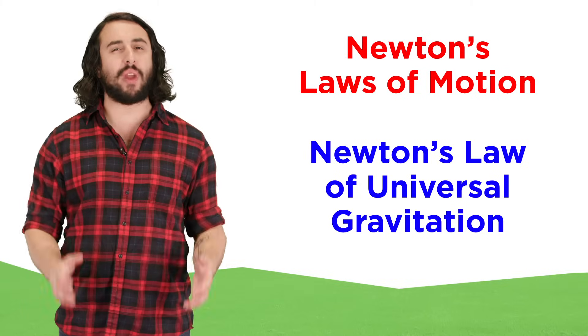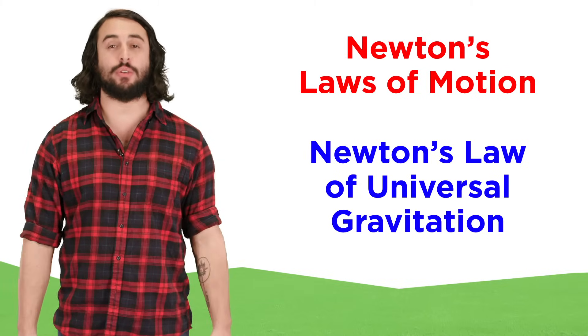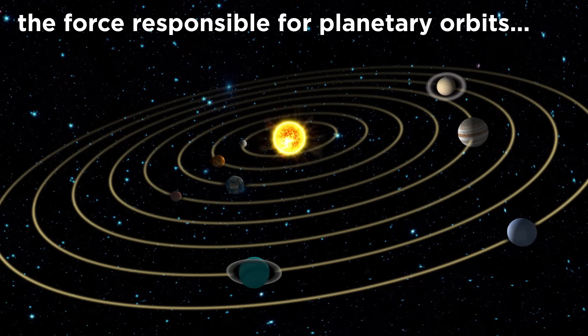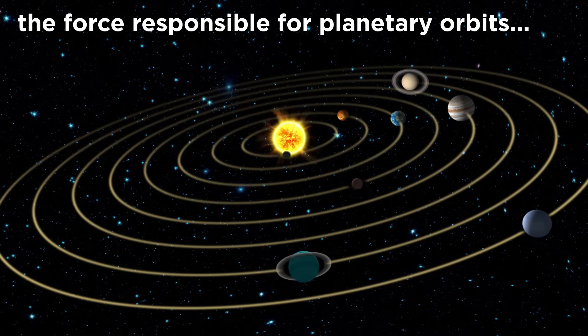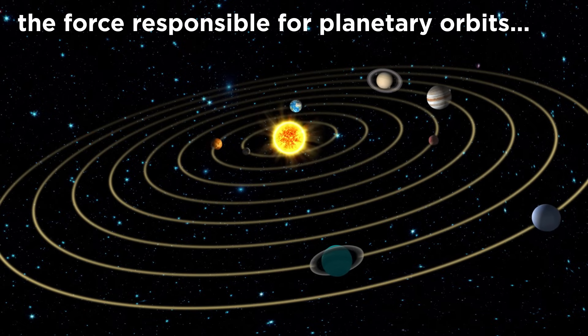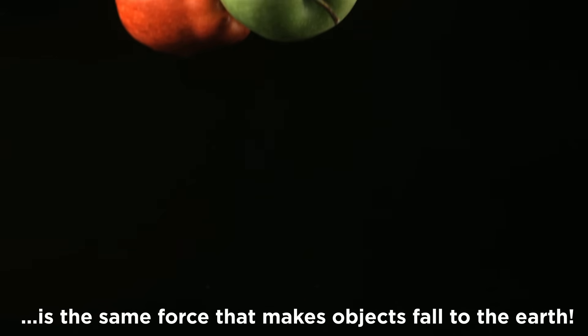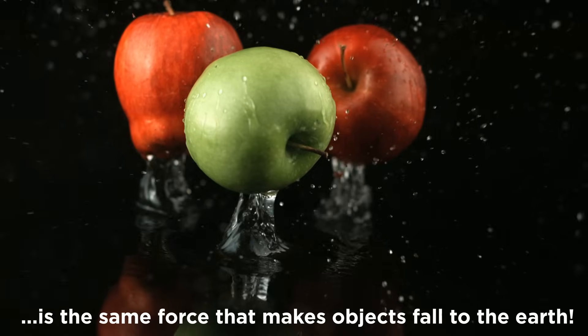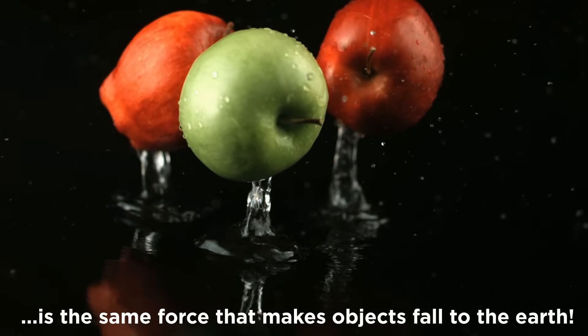In possibly one of the greatest strokes of genius in the history of mankind, Newton looked at the motion of the planets in their nearly circular orbits around the Sun and understood that the centripetal force causing this motion was precisely the same force that causes objects to fall down towards Earth, which we call the gravitational force.